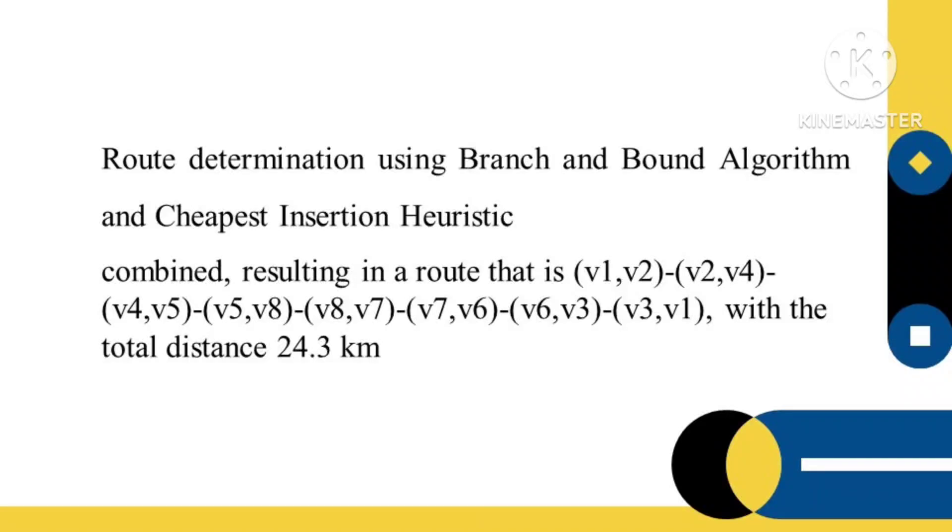The next step after setting V1 as the start and end point is to set the subtour between two points, choosing V1 to V3, V3 to V1 as the initial subtour. Then, a table is formed to collect the result of inserting other points into each side of the initial subtour.